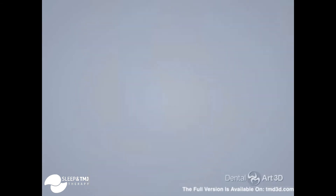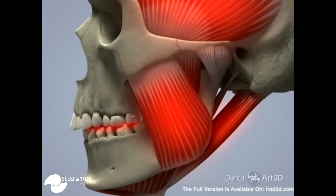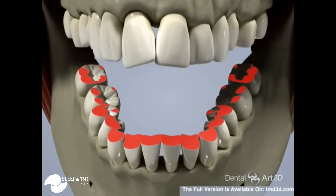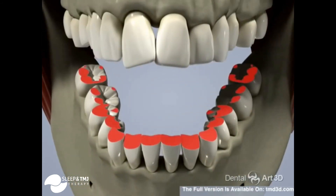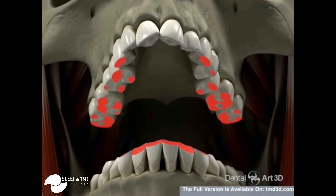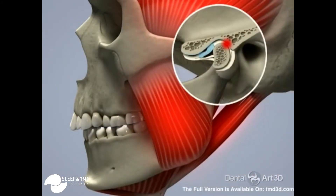Over time, grinding can result in severely worn down teeth. As a result, the teeth become even shorter, the lower jaw shifts distally even further, and the vertical of the bite decreases. In time, joint degeneration occurs.